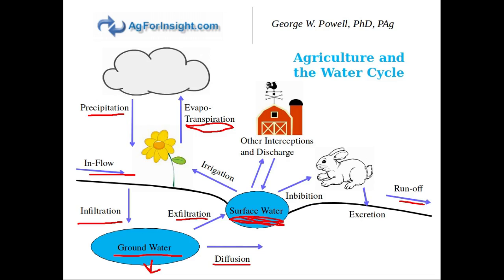Agriculture makes use of these inflows, surface water, and groundwater in various ways. Crops will access a certain portion of their water needs from groundwater in the surface layers of their rooting zone, and we can also supplement that with irrigation. Livestock will drink water and excrete water, and we also have a variety of other uses of water on farm — for example, wash water or evaporative coolers which draw water and release it back into the cycle.